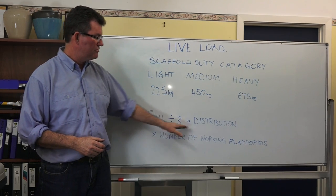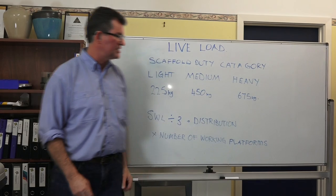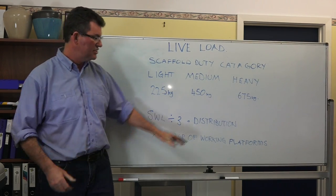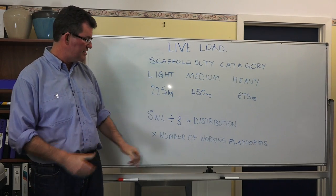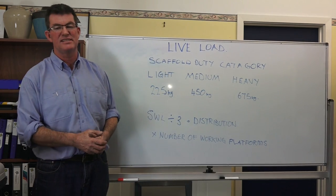Safe working load divided by three equals the distribution of the load. If I was to take a heavy duty scaffold 675 kilos and divide it by three that gives me 225 kilos. So the distribution from that working platform is 225 kilos, so I then need to multiply it by the number of working platforms attached to that standard.